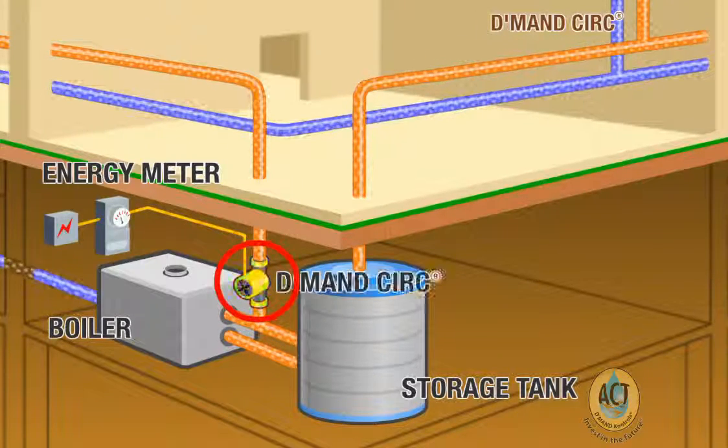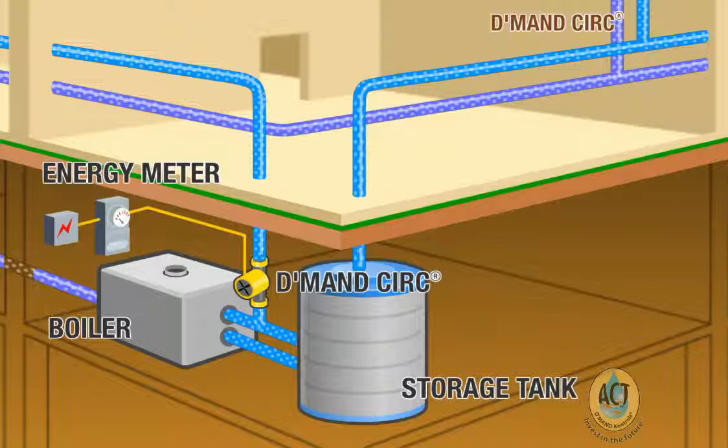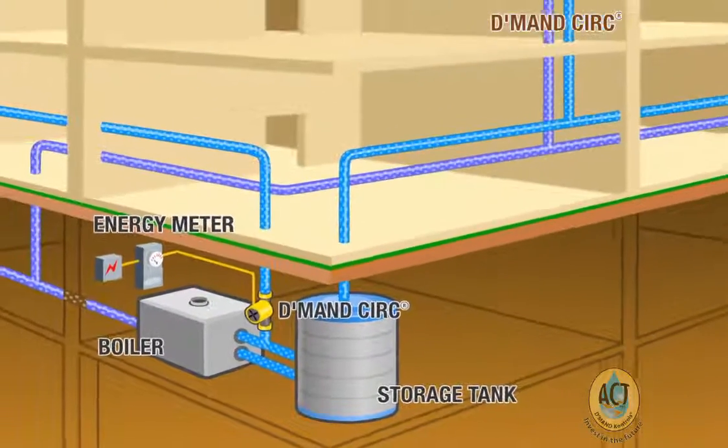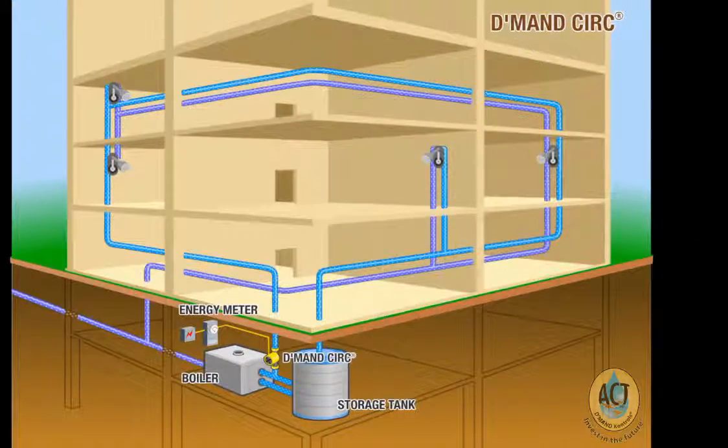Replacing your existing recirculation pump with the Demand CIRC will allow you to take control of your recirculation system and significantly reduce your standby energy losses. Here's how it works.